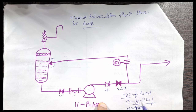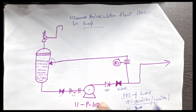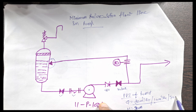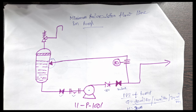In the process data sheet, this is the normal flow rate. Let's assume that 10 cubic meters per hour is the minimum flow rate, 20 cubic meters per hour is the normal flow rate, and 30 cubic meters per hour is the maximum flow rate, with a head of 30 meters.